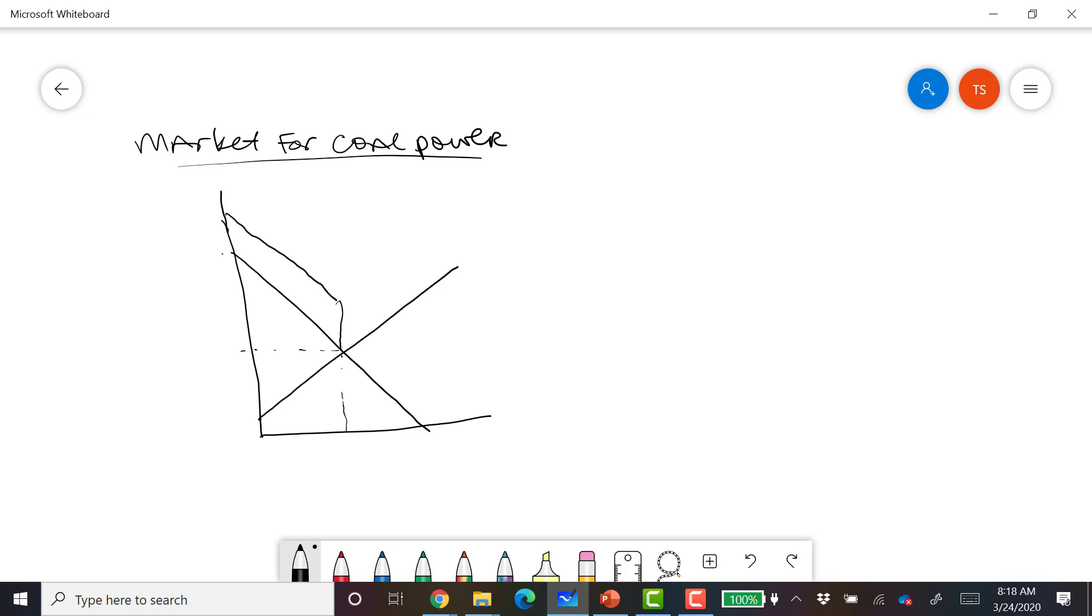Okay? So this is our intercept of our demand curve, and our intercept of our supply curve, and this vertical distance here, D.